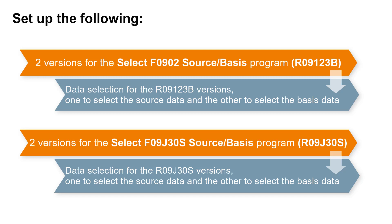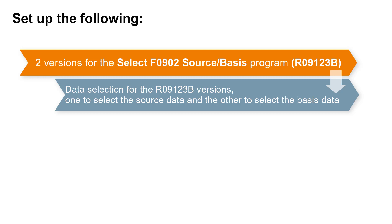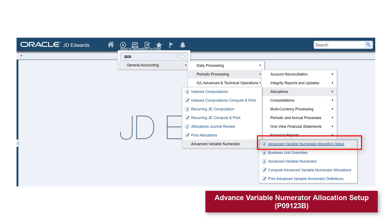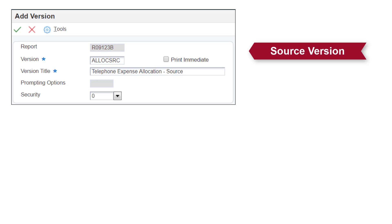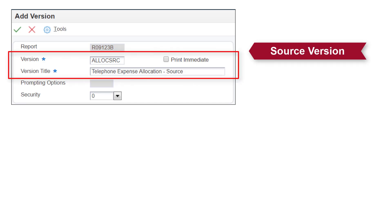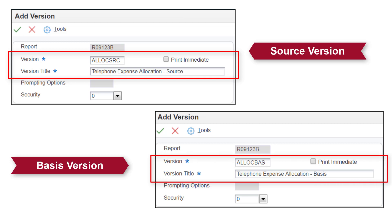First, let's create the two versions of the R09123B program and set up the data selection for the versions. Access the advanced variable numerator setup program P09123B and click the button to create source basis data selection versions for account balance-based allocations. On the Add Version form, enter a version and version title. You will create one version to select the source transactions from the account balances table F0902, and another version to select the basis from the F0902 table. Provide identifiable names for the versions and version titles so that you can easily identify the source and basis versions.